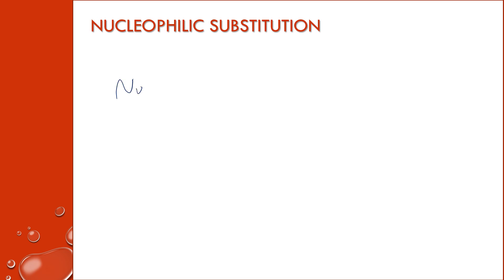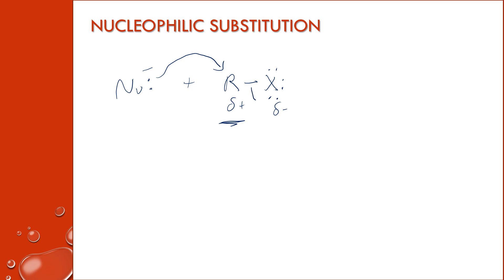A nucleophile is going to have some extra electrons that it can donate to form a coordinate covalent bond. The carbon that it's going to react with typically has a halogen on it, because halogens are good leaving groups. It creates this polar bond where the carbon winds up slightly positive because the halogen is slightly negative. Because of this slight positive charge, the negative charge from the nucleophile can attack the carbon, and then the electrons in the bond to the halogen are broken. So you wind up with the nucleophile attached to the carbon and the halogen now separate. That's why we call it a substitution — the nucleophile takes the place of the halogen in the compound.